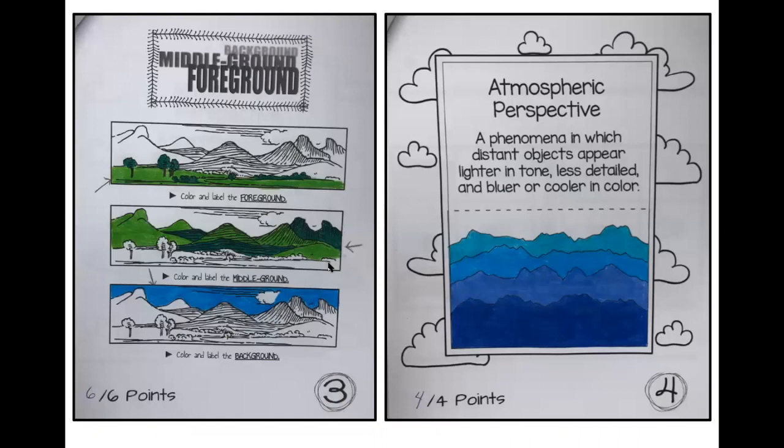You're going to do pages three and four next. On page three, you're going to color the foreground, then color the middle ground next, and then color the background last. On page four, you're going to color using atmospheric perspective. Remember, the ones that are closer are darker, and as it goes further away, it gets lighter.